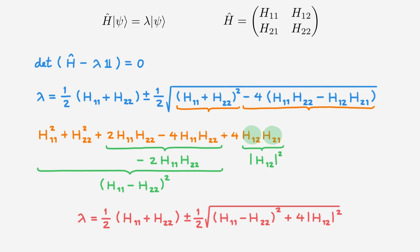And this is it! Whenever we have a two-state quantum system, we can find its eigenvalues by evaluating this expression in terms of the corresponding matrix elements. As a sanity check, remember that the eigenvalues of a Hermitian operator are real numbers, and you should convince yourself that this expression does indeed lead to real eigenvalues.